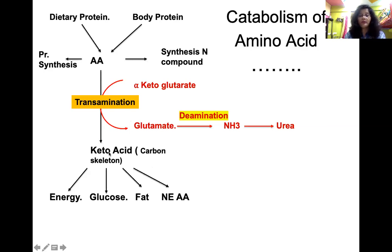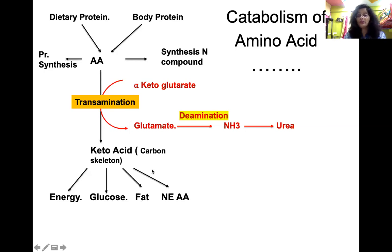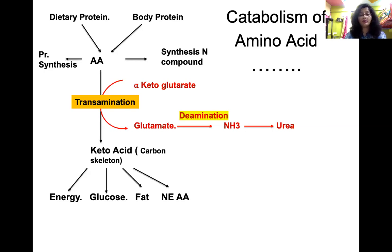What is the fate of the keto acid formed? Keto acids can undergo complete oxidation to produce energy in the form of ATP, take part in gluconeogenesis to form glucose, serve as precursors for fat synthesis, or via transamination form non-essential amino acids. This gives an overview of amino acid catabolism, showing that transamination and deamination are very important processes.